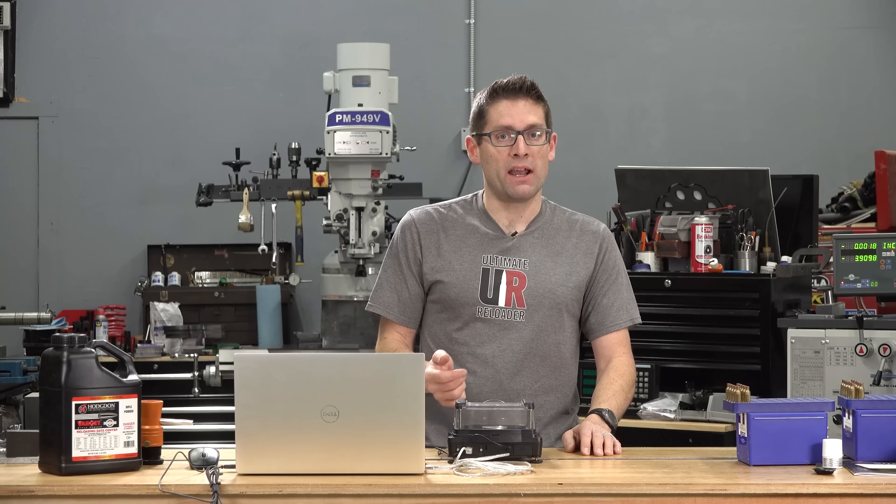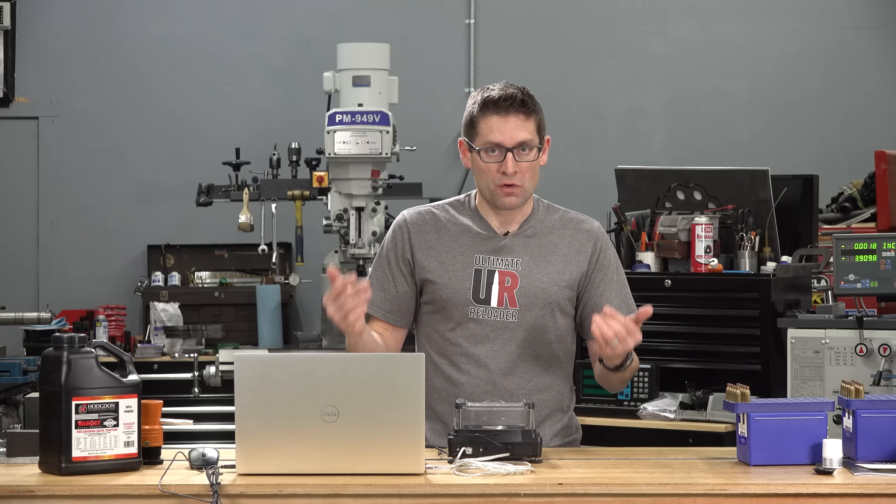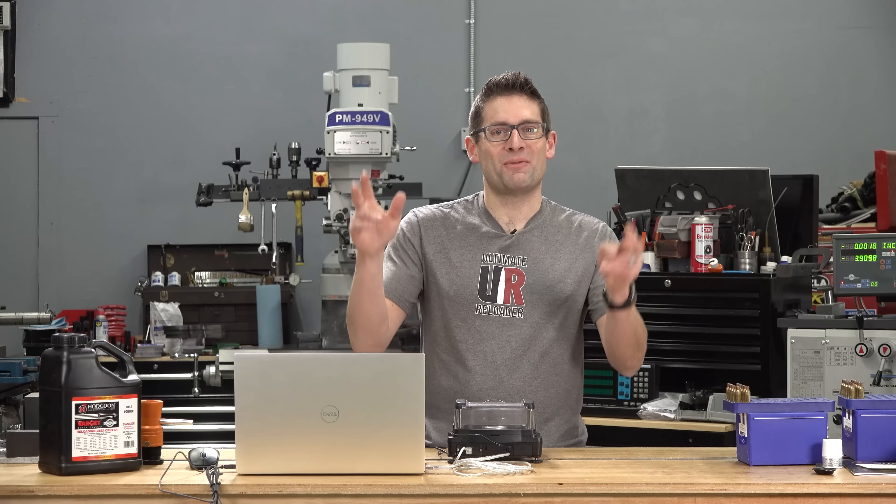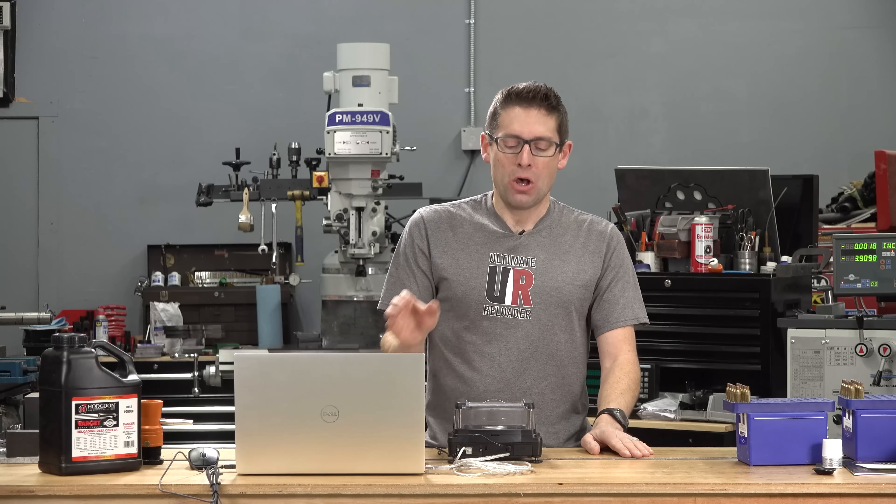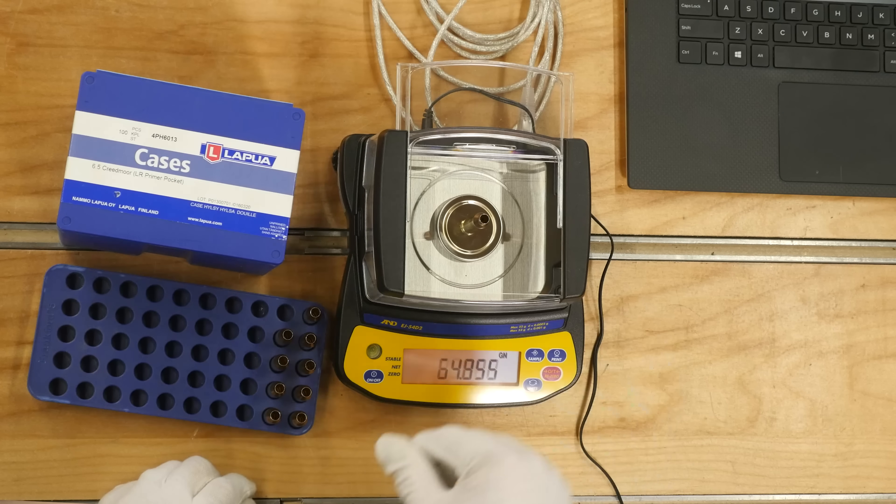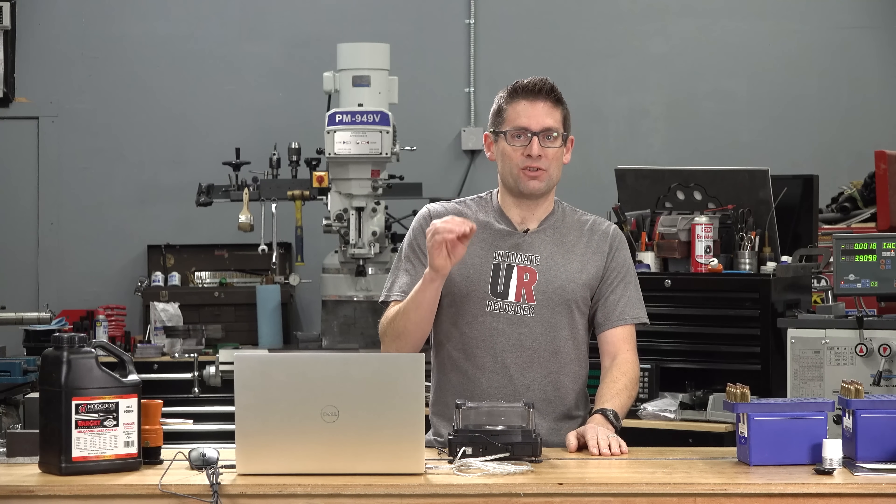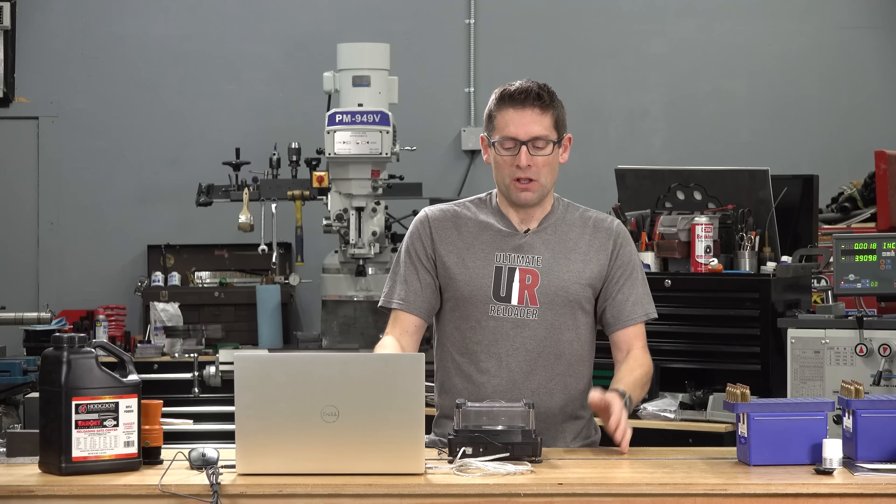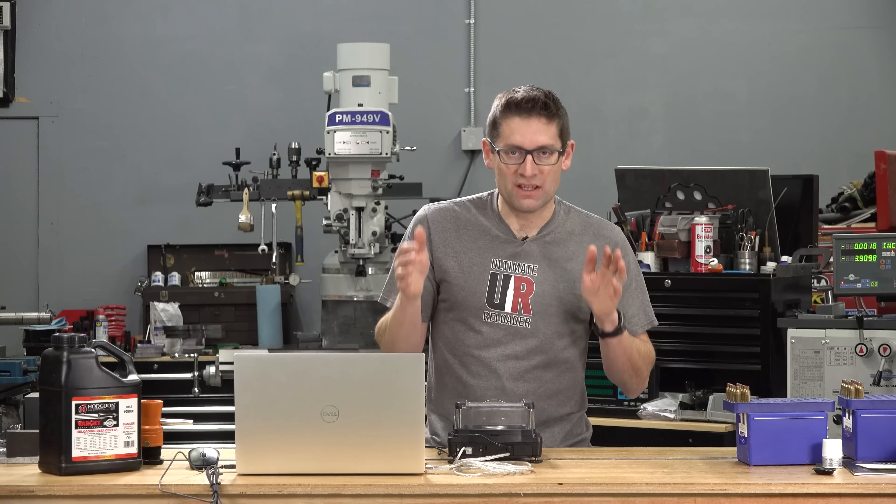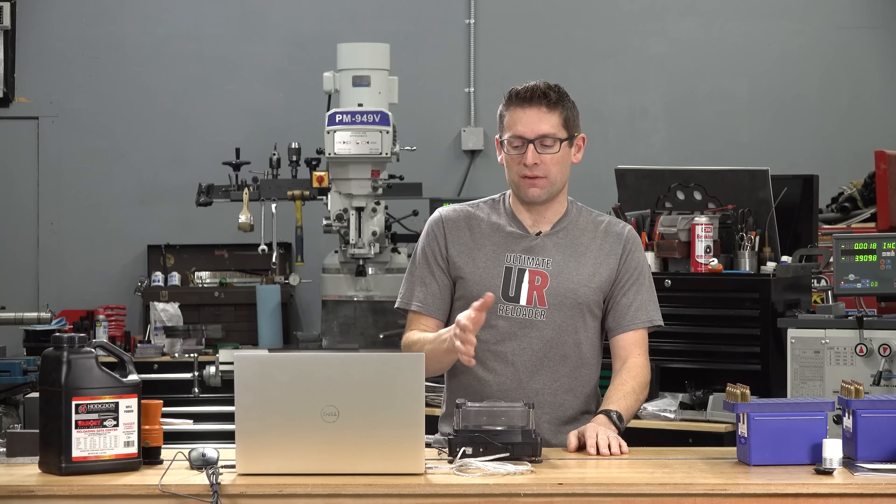Whereas the A&D FX120i can handle about 1500 grains. So they're kind of on a little bit of a different scale, if you will. I also noticed that this scale has a longer settling time. The FX120i, for instance, comparing the two, has a very fast acquisition and settling time. So different price points, different accuracy levels and different capabilities.